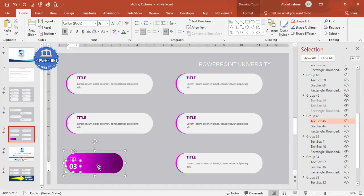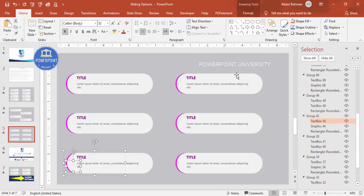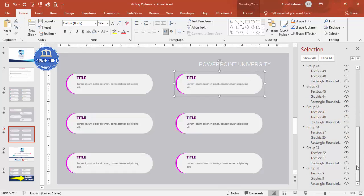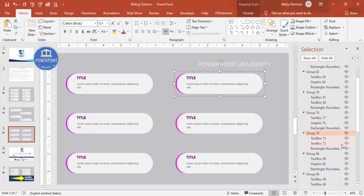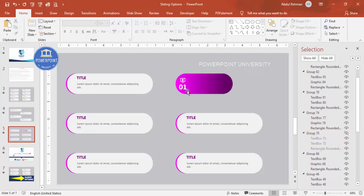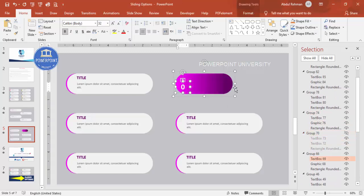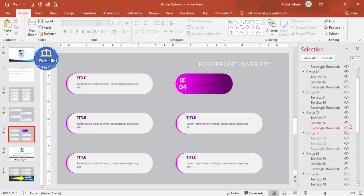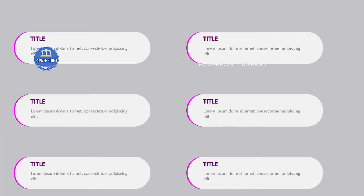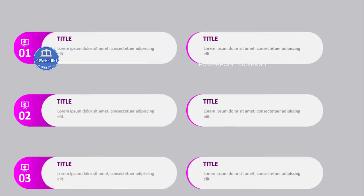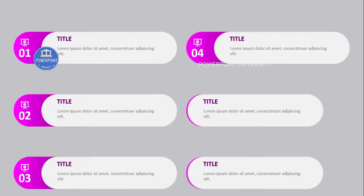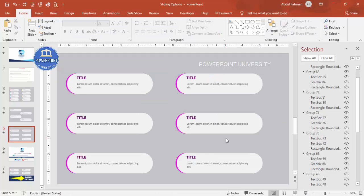Repeat this process for each option: hide the front layer, change the number to three, four, and so on, then re-enable visibility. You can also change the background color of each card. Once all options are updated, play through the slide to see one, two, three, four animate in sequence.